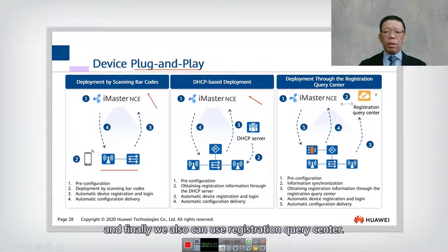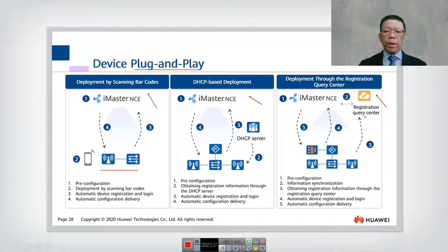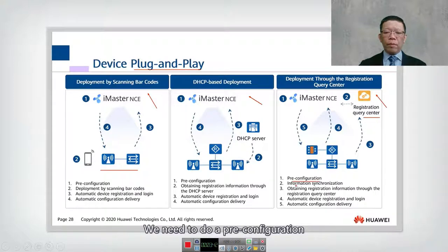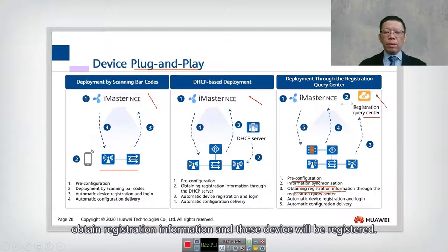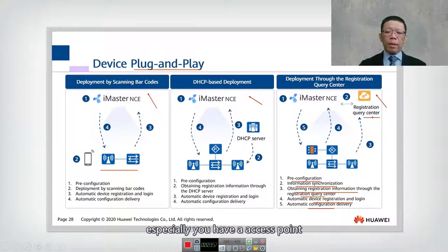The third method uses a registration query center. Rather than DHCP, a query center is used. Pre-configuration is done, and the registration query center and iMaster are synchronized in the cloud. The device obtains registration information and is registered. This is handy for access points, switches, or routers.